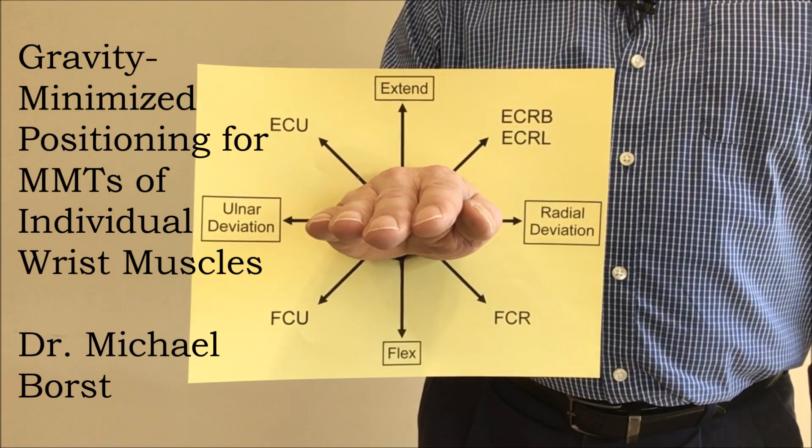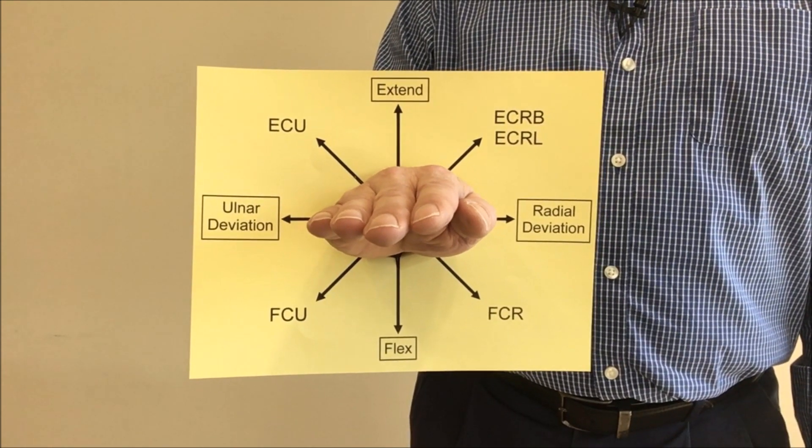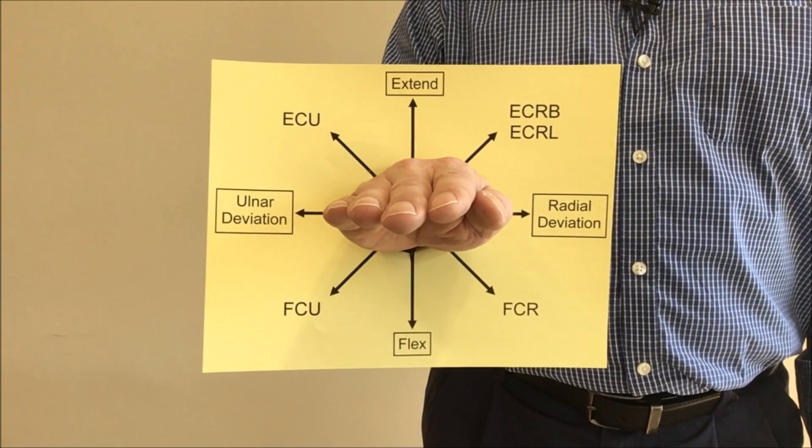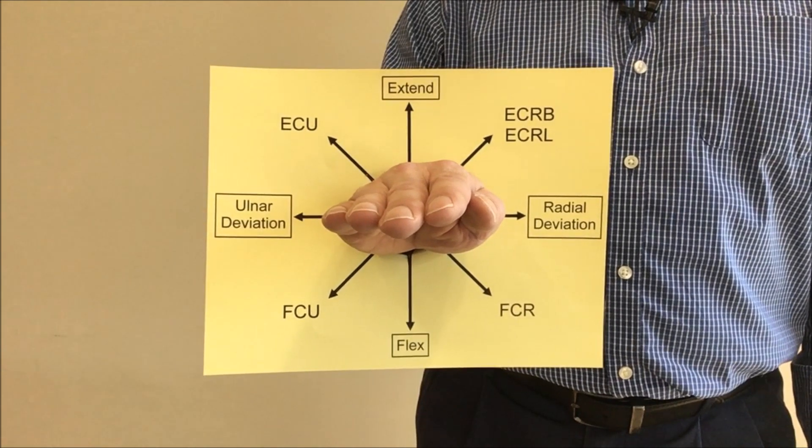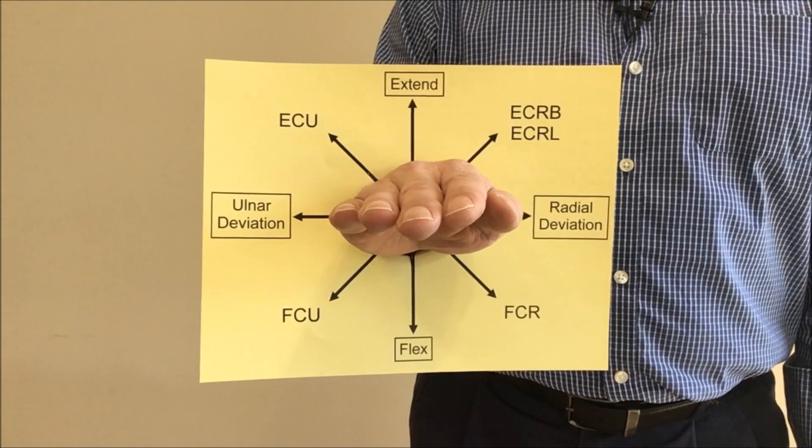In this video, I want to show you how to create the gravity minimized positioning for manual muscle testing of the wrist muscles, that is the carpi muscles.